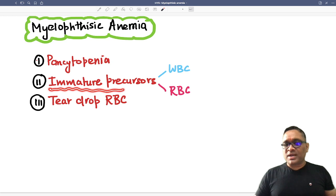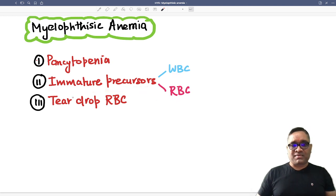And there will be immature precursors in the peripheral blood. So immature precursors of the WBC and immature precursor of the RBC will be present in the peripheral blood. And because of the maturity defect, there will be teardrop RBC on peripheral smear examination.